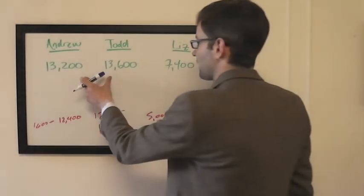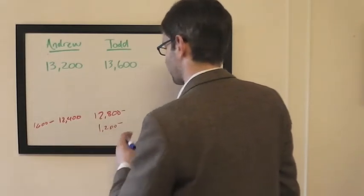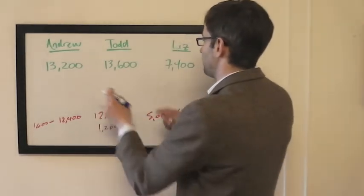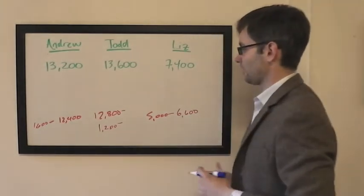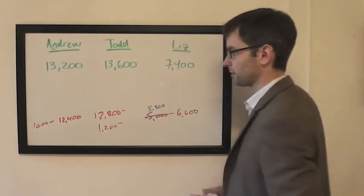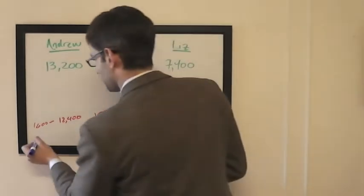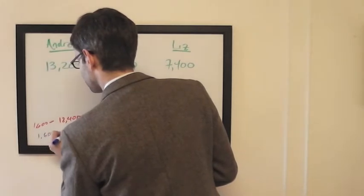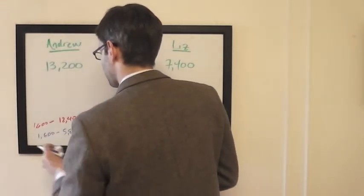Let's start with Andrew and Todd. They're separated by just $400, so $400, $800, nothing that can be done there. Andrew and Liz are separated by $5,800. So we'll bump that up there, and I'll drop that down there.